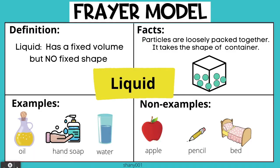Liquid. Definition: has a fixed volume but no fixed shape. Facts: particles are loosely packed together; it takes the shape of its container. Examples: oil, hand soap, water. Non-examples: apple, pencil, bed.